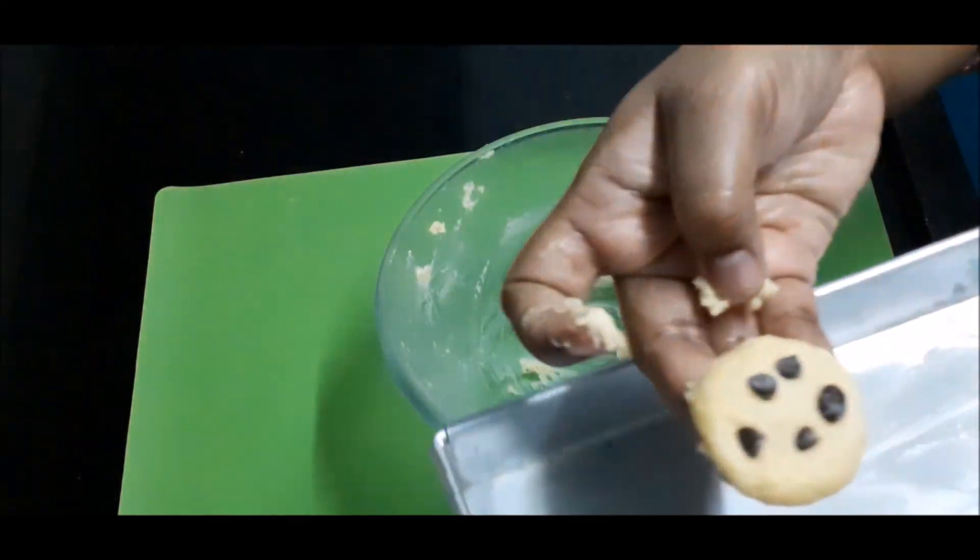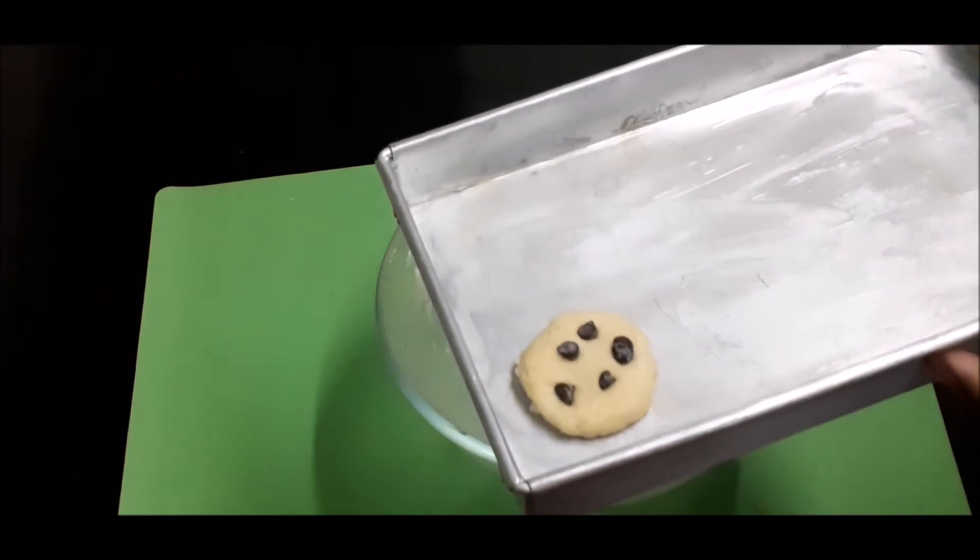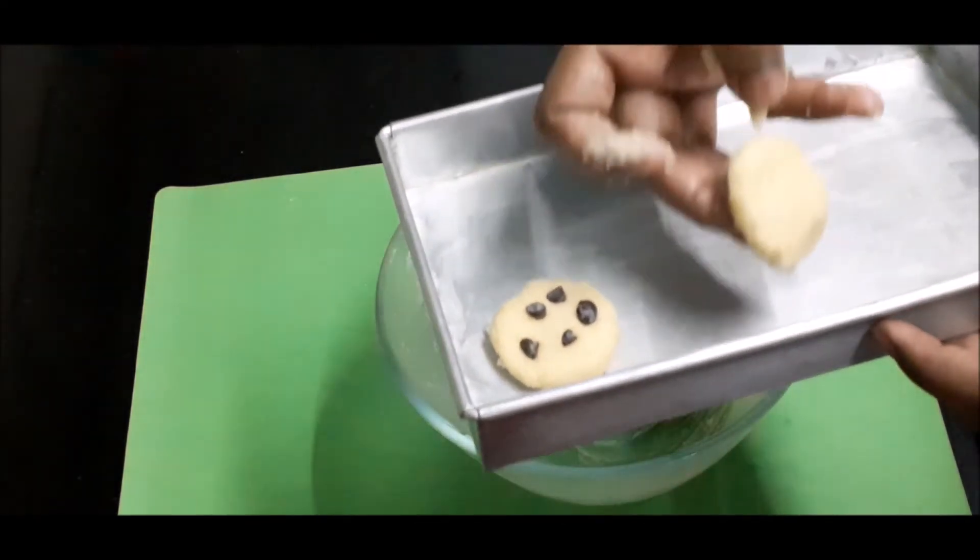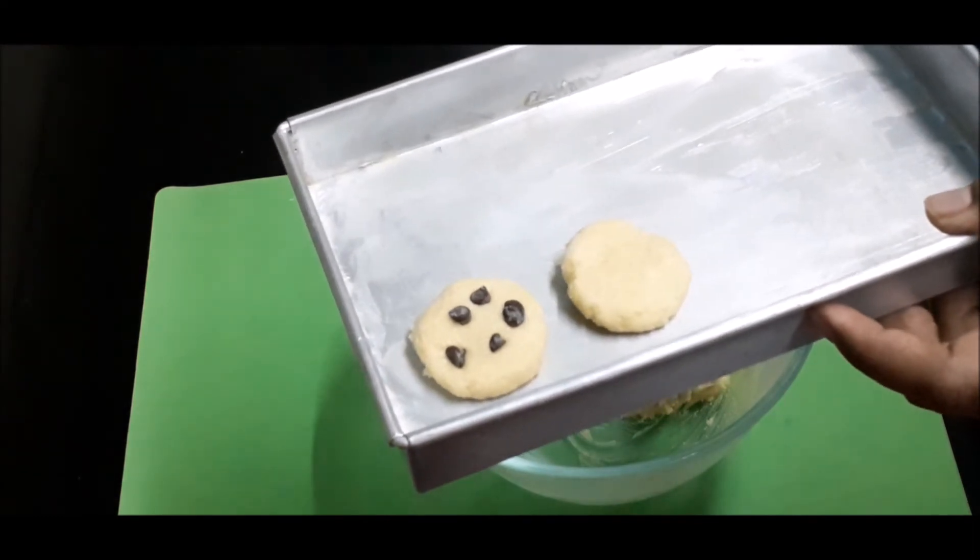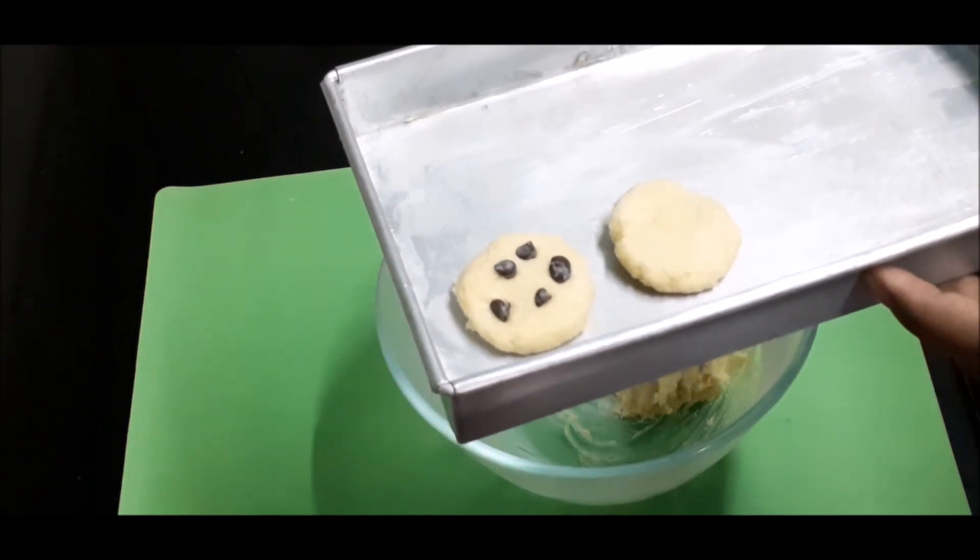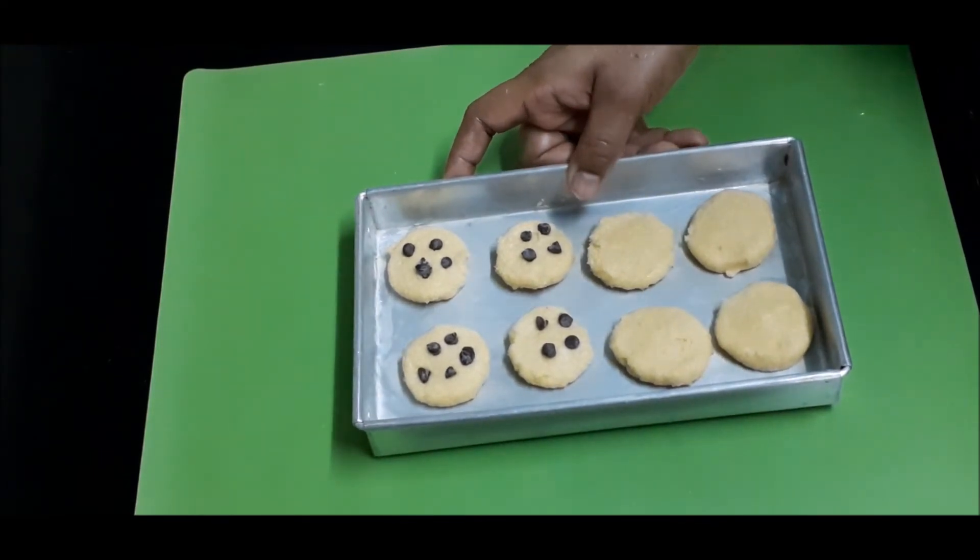I have added some choco chips to get a choco chip cookie. Now I am going to bake this in a preheated oven at 180 degrees for only 15 minutes.